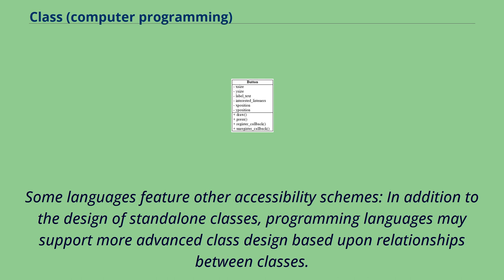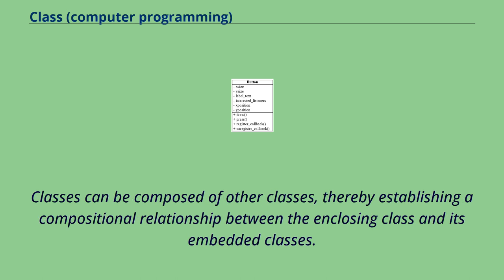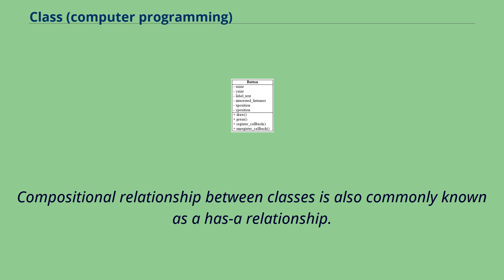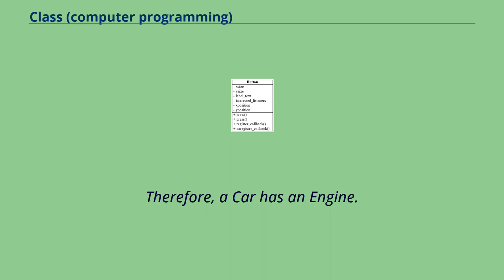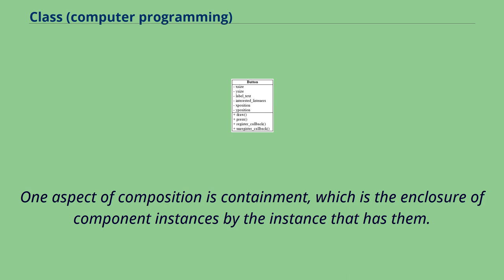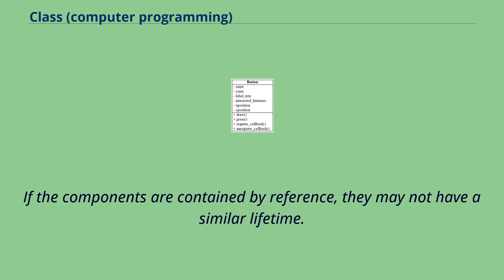In addition to the design of standalone classes, programming languages may support more advanced class design based upon relationships between classes. The inter-class relationship design capabilities commonly provided are compositional and hierarchical. Classes can be composed of other classes, thereby establishing a compositional relationship between the enclosing class and its embedded classes. Compositional relationship between classes is commonly known as a 'has-a' relationship. For example, a class car could be composed of and contain a class engine — therefore, a car has an engine. One aspect of composition is containment, which is the enclosure of component instances by the instance that has them.